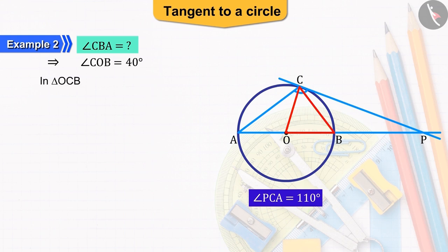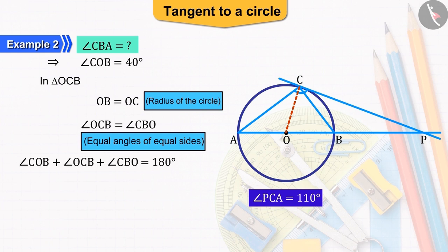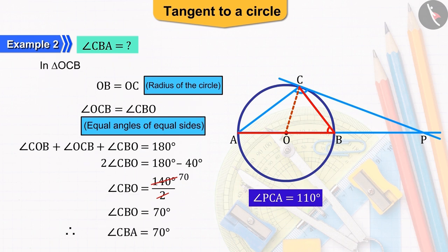Now, we can see in triangle OCB that the sides OB and OC are equal being the radii of the circle. Due to which, the opposite angles are also equal. The sum of all the angles of a triangle is 180 degrees. Due to which, angle CBO equals to 70 degrees, which we can also write as angle CBA.